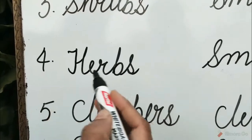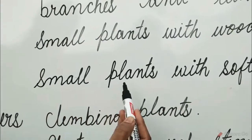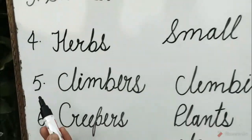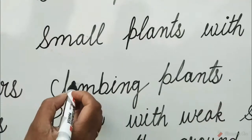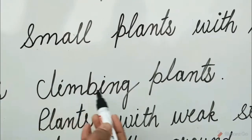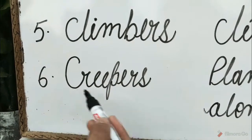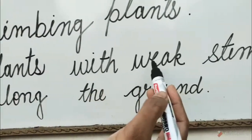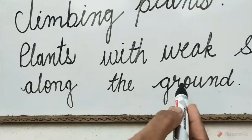Number 4: Shrubs means small plants with soft stems. Number 5: Climbers means climbing plants. Number 6: Creepers means plants with weak stems that grow along the ground.